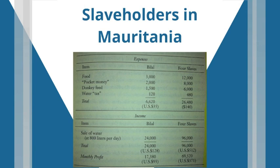In Mauritania, the most common use for slaves is distributing water to households that do not get plumbing supplied to them. Slaveholders here can easily make, as you can see from this chart, about $228 a month, even though keeping the slave alive only costs them $35 a month.